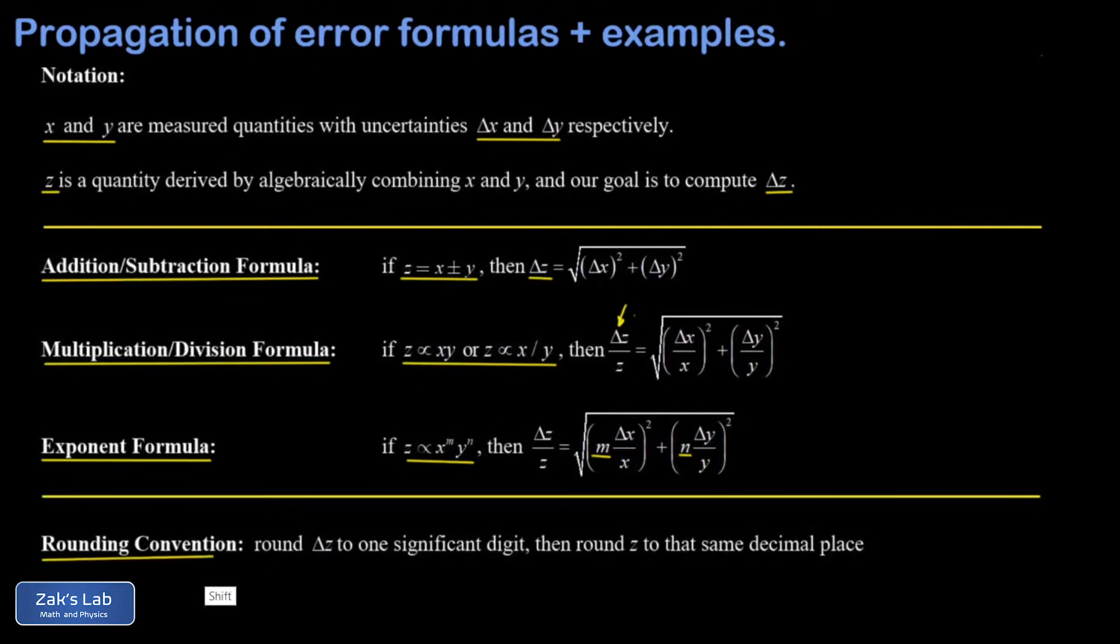Finally, we're going to use a rounding convention to round our uncertainty to one significant digit. And then we're going to round the quantity z to that same decimal place as the uncertainty. Now that's a lot to digest, so we're going to clarify all of this with three examples, one for each formula.